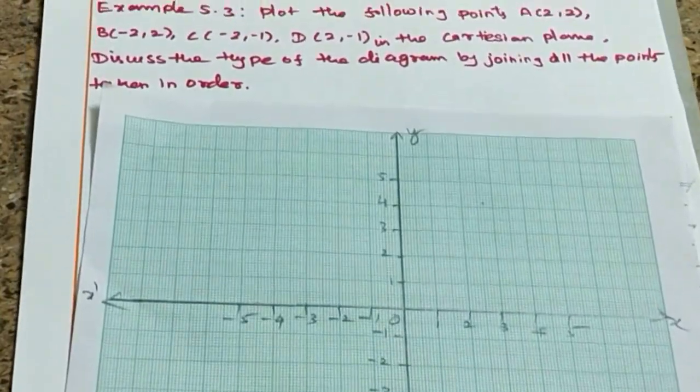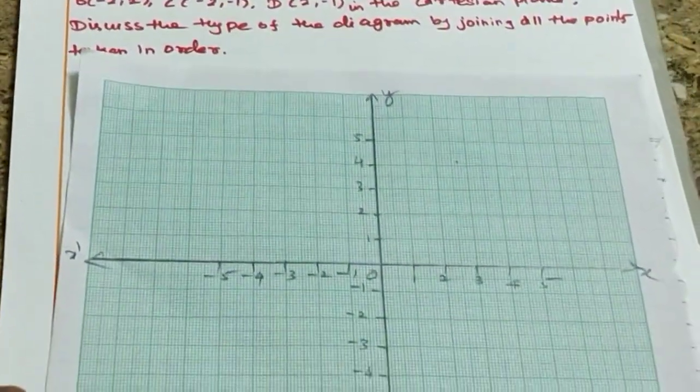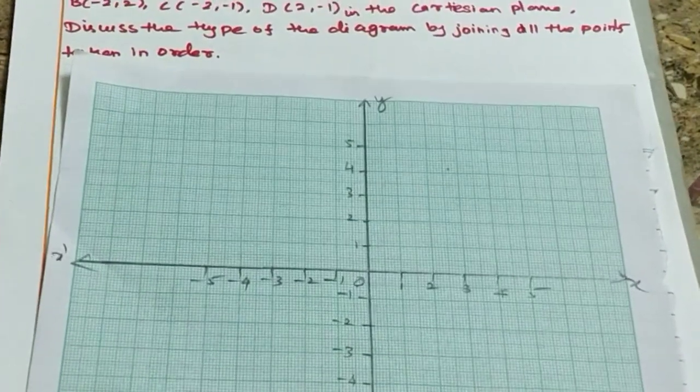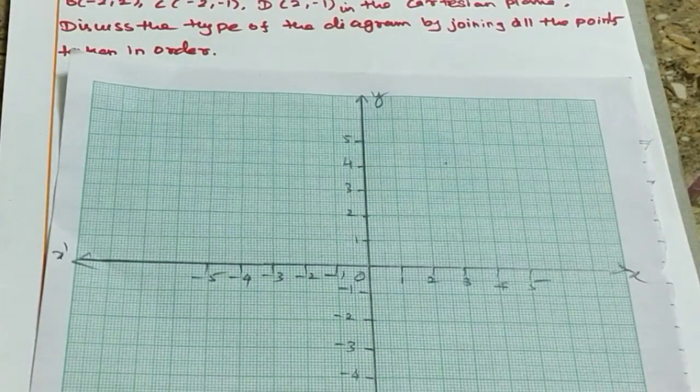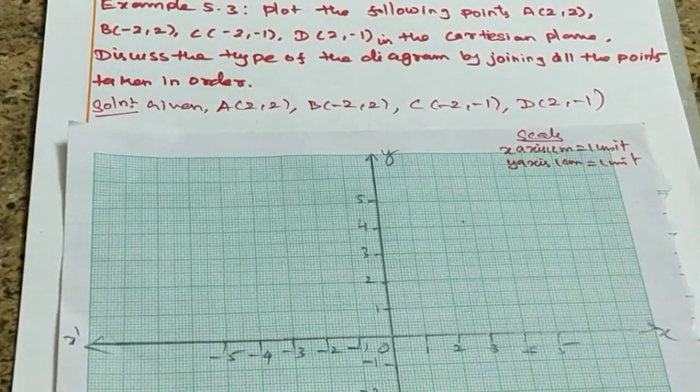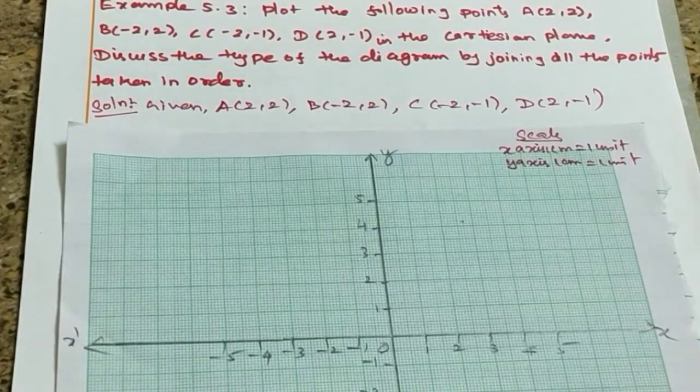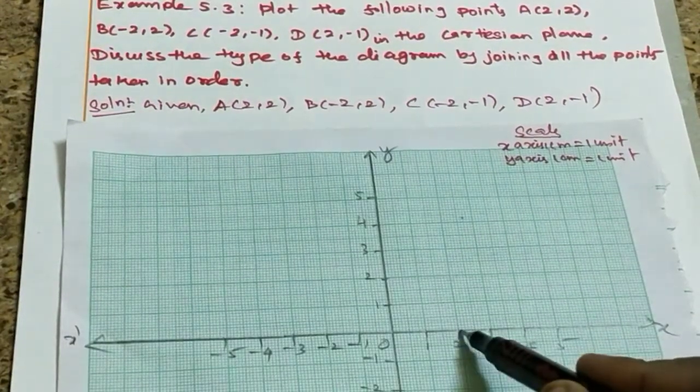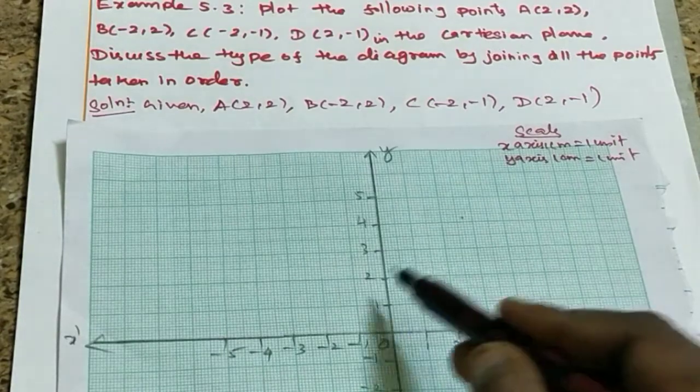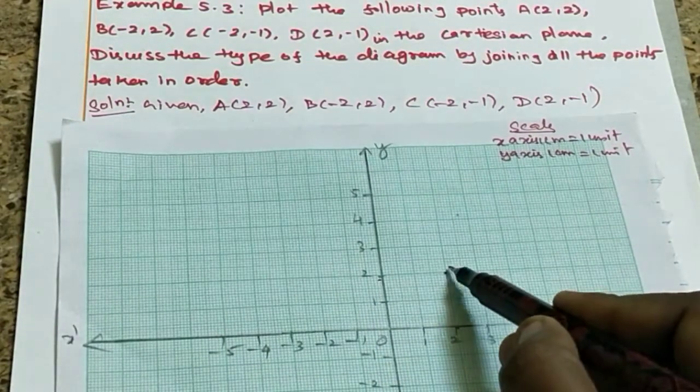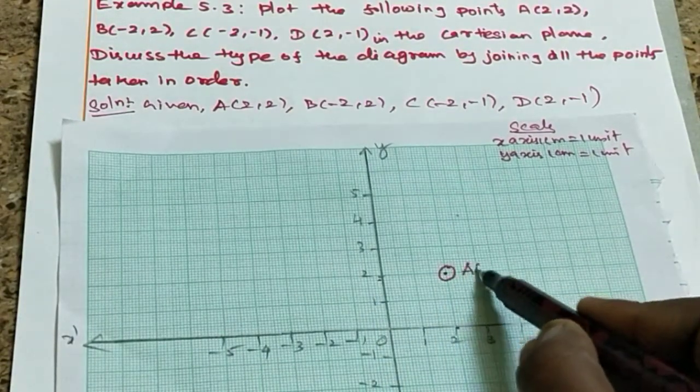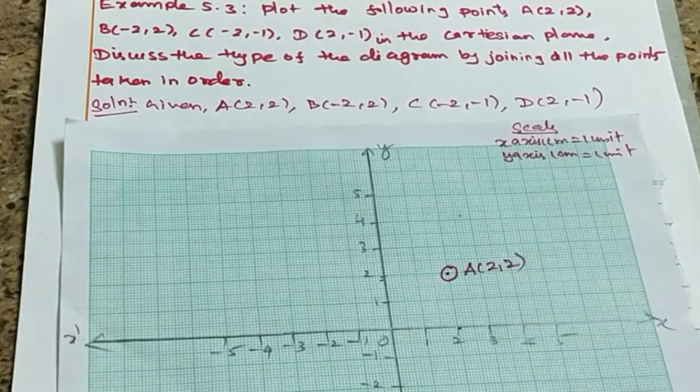First point is A equal to 2,2. So let's plot the first point at 2,2. This is 2 and 2, the A point A of 2,2.